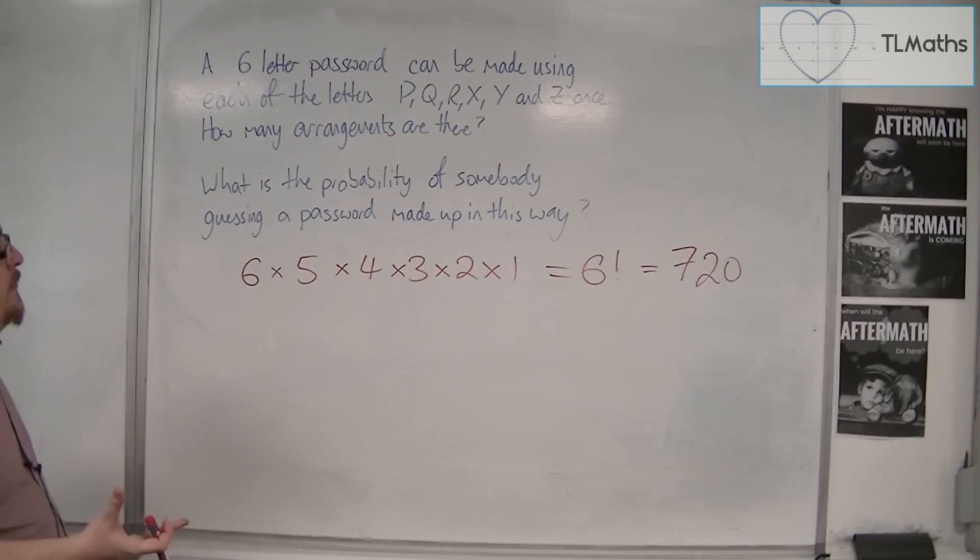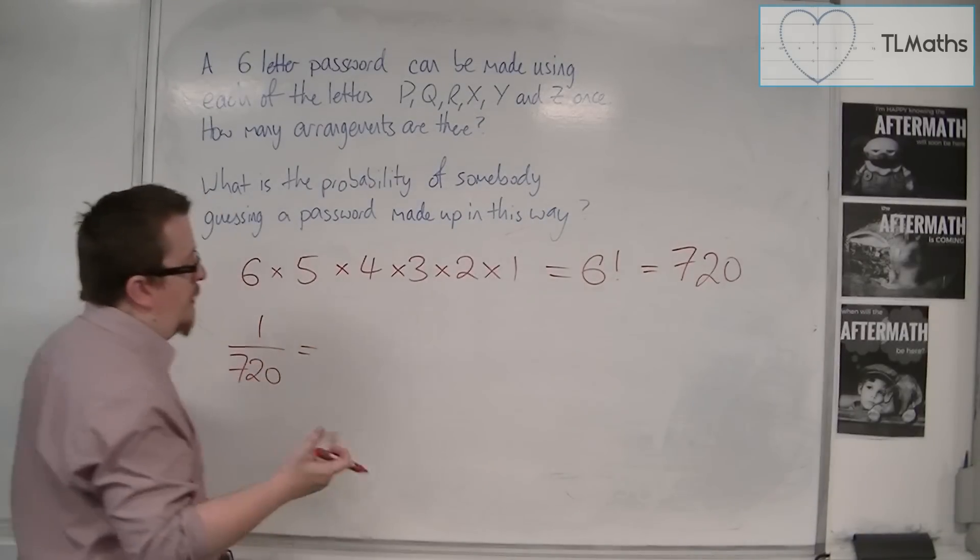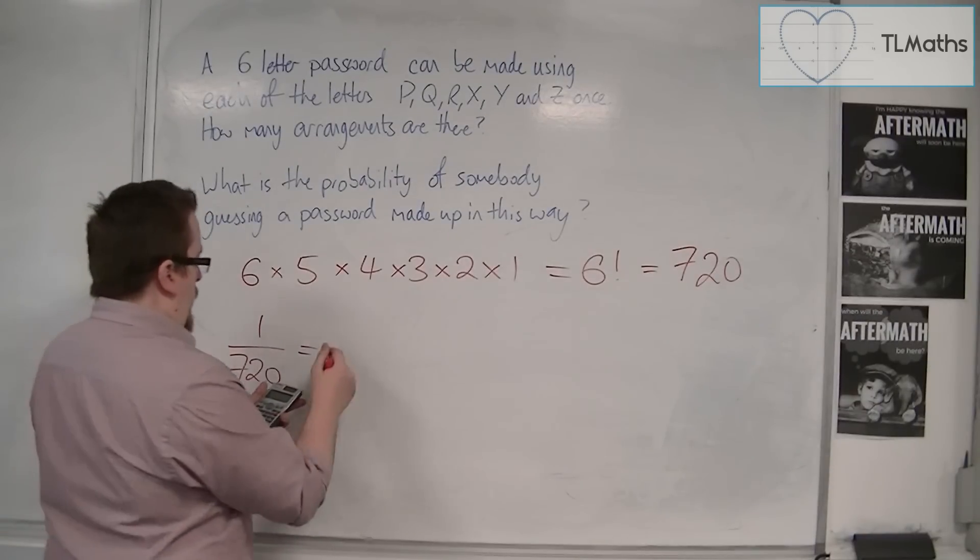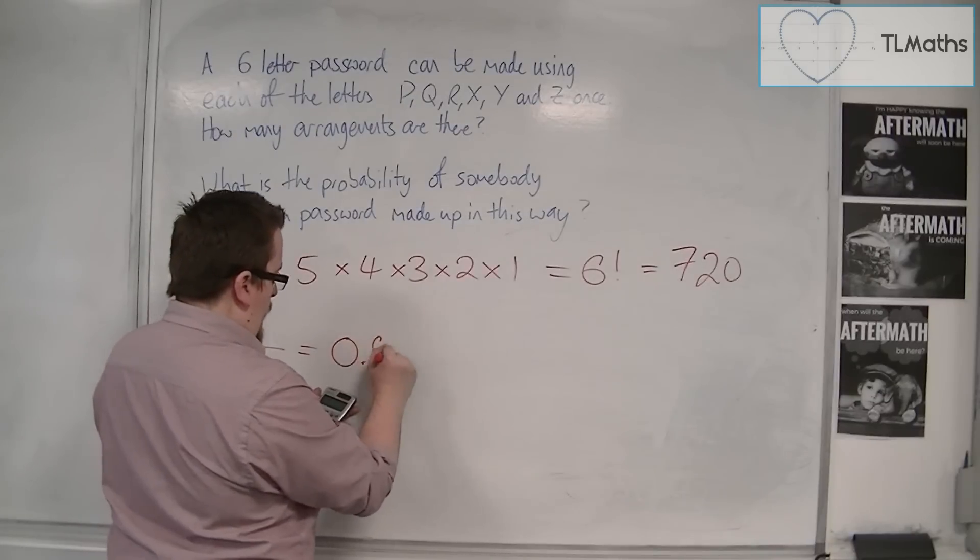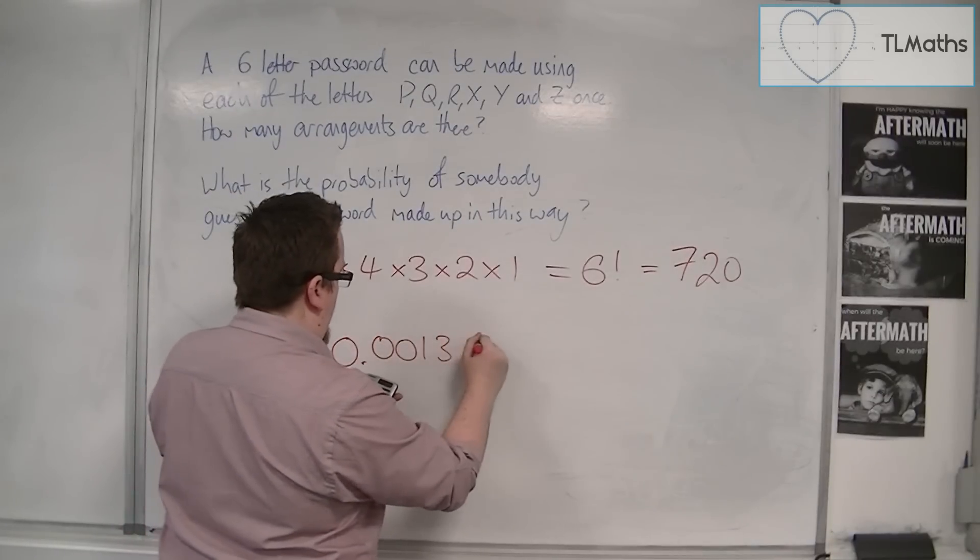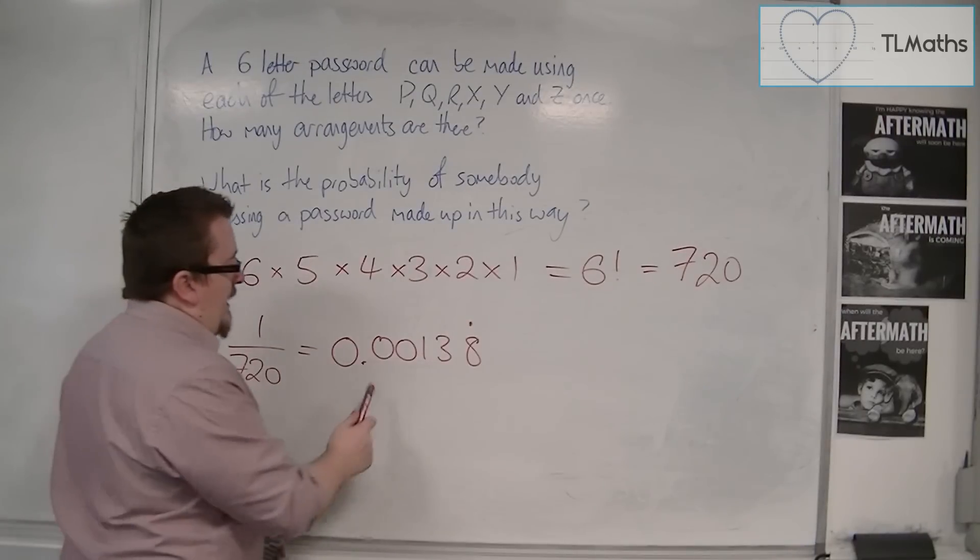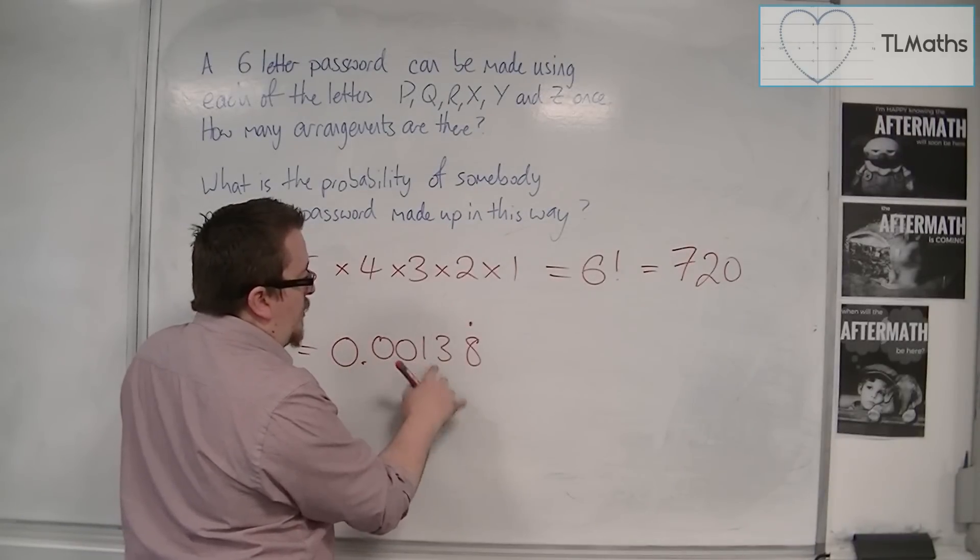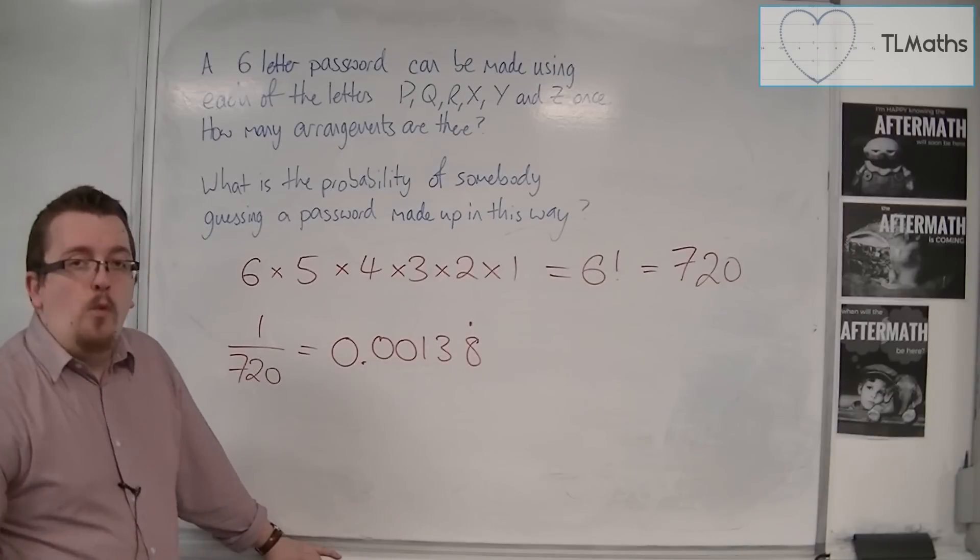Now what is the probability of somebody guessing a password made up in this way? That would be one out of 720. One out of 720, my calculator gives it in standard form, which would be 0.00138 recurring. So in actual fact, it's like 0.138%, so just 0.1 of a percent.